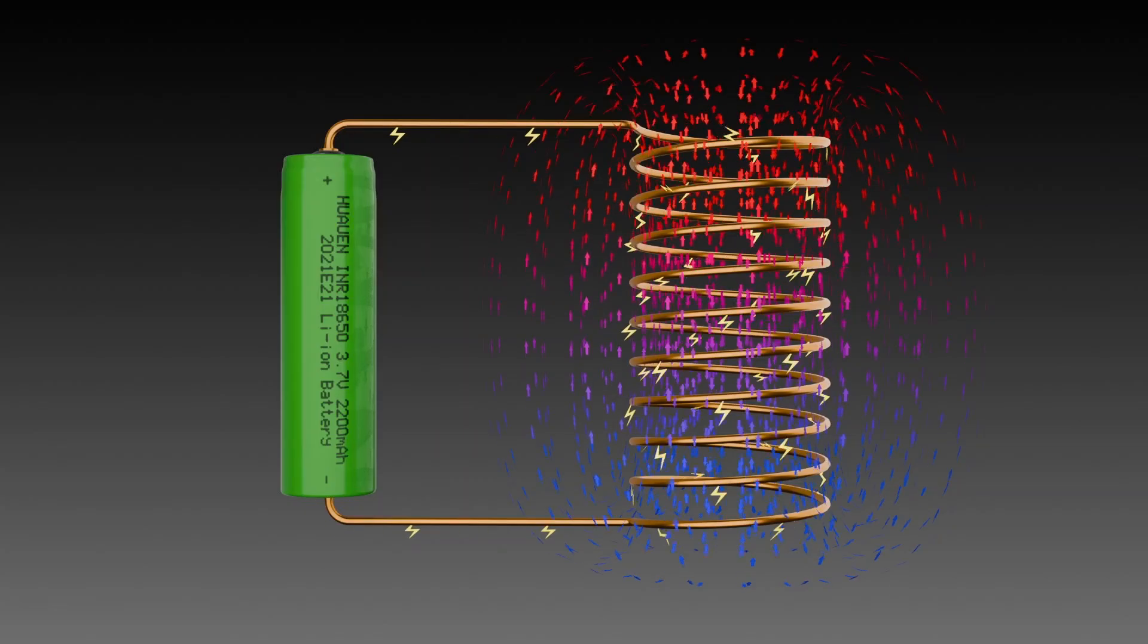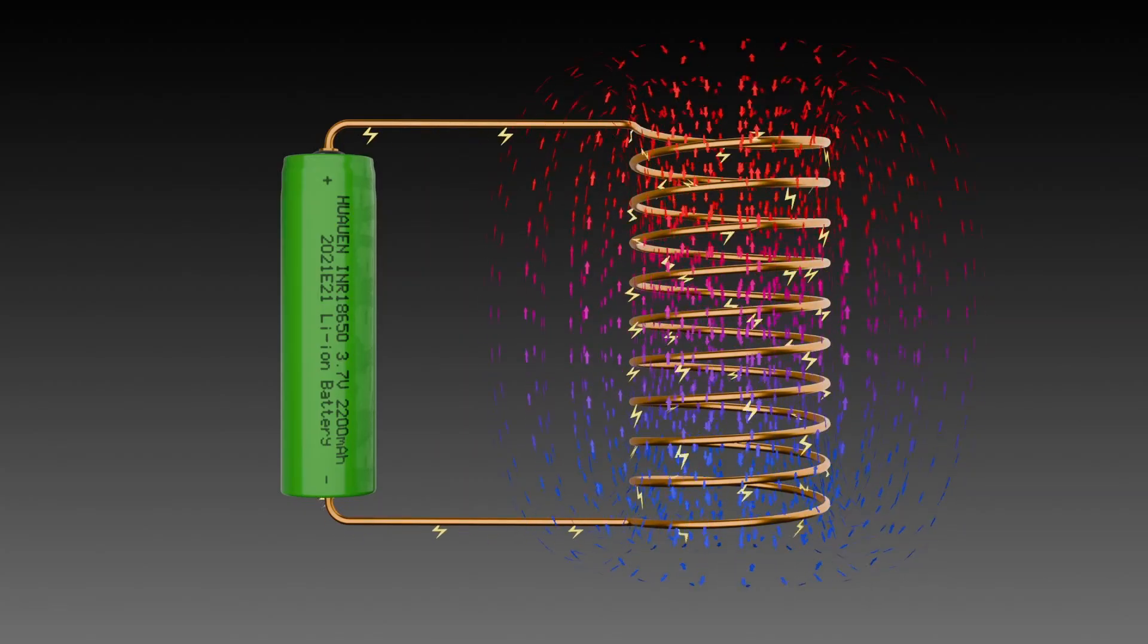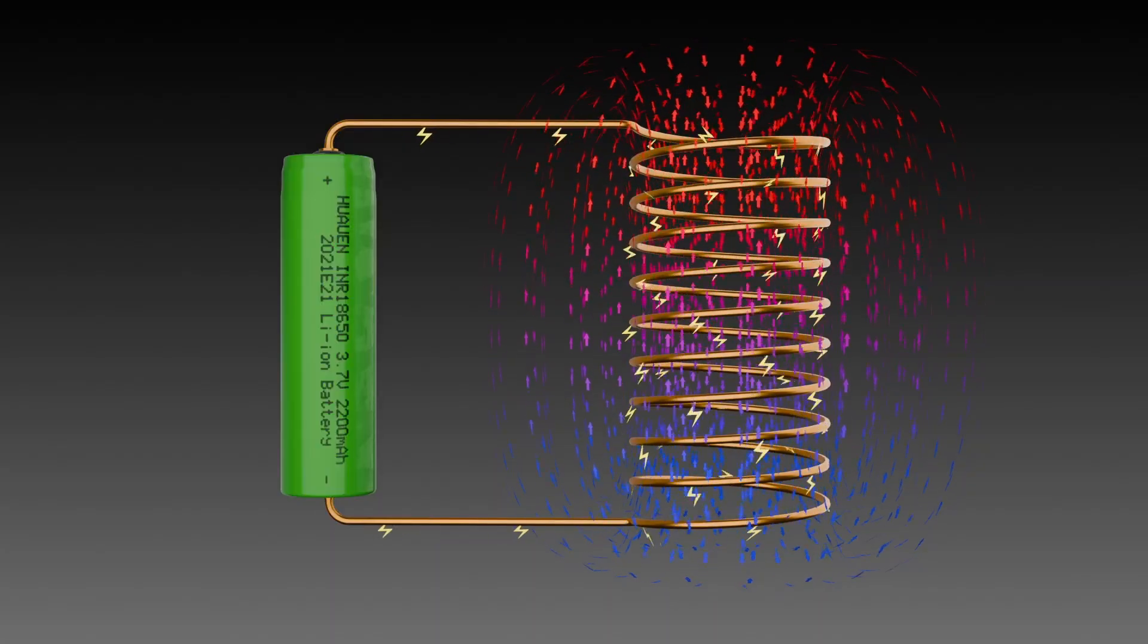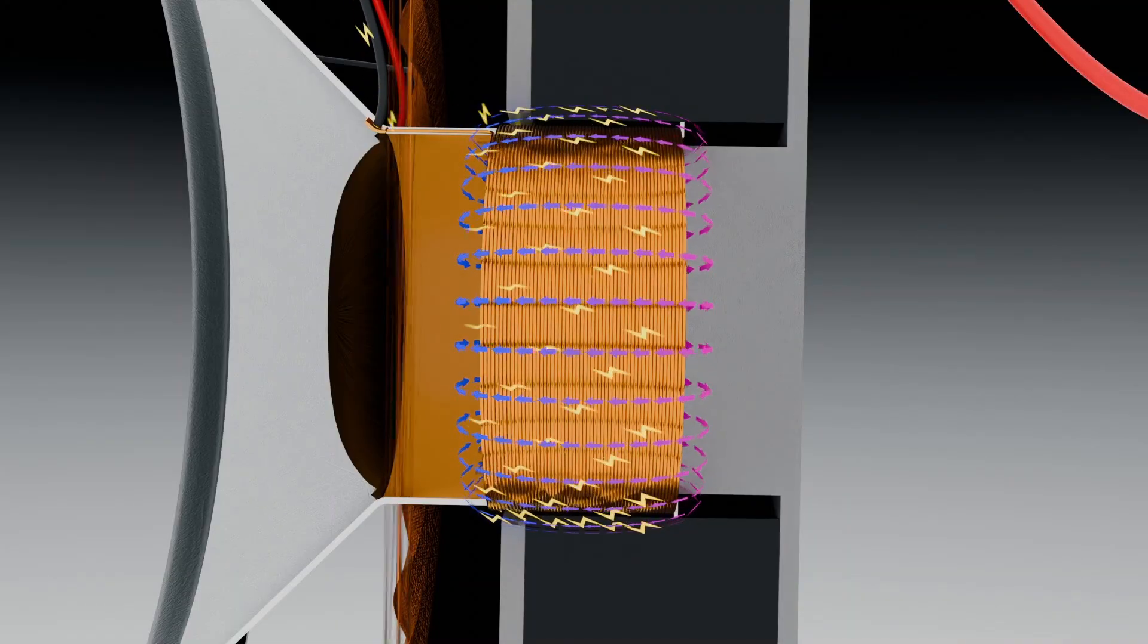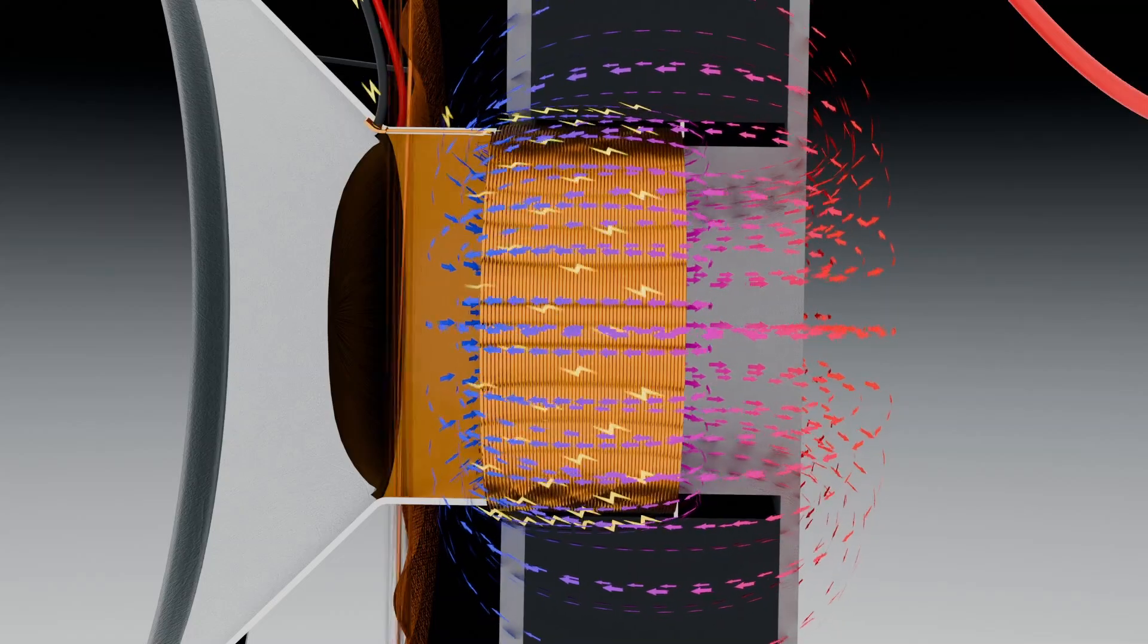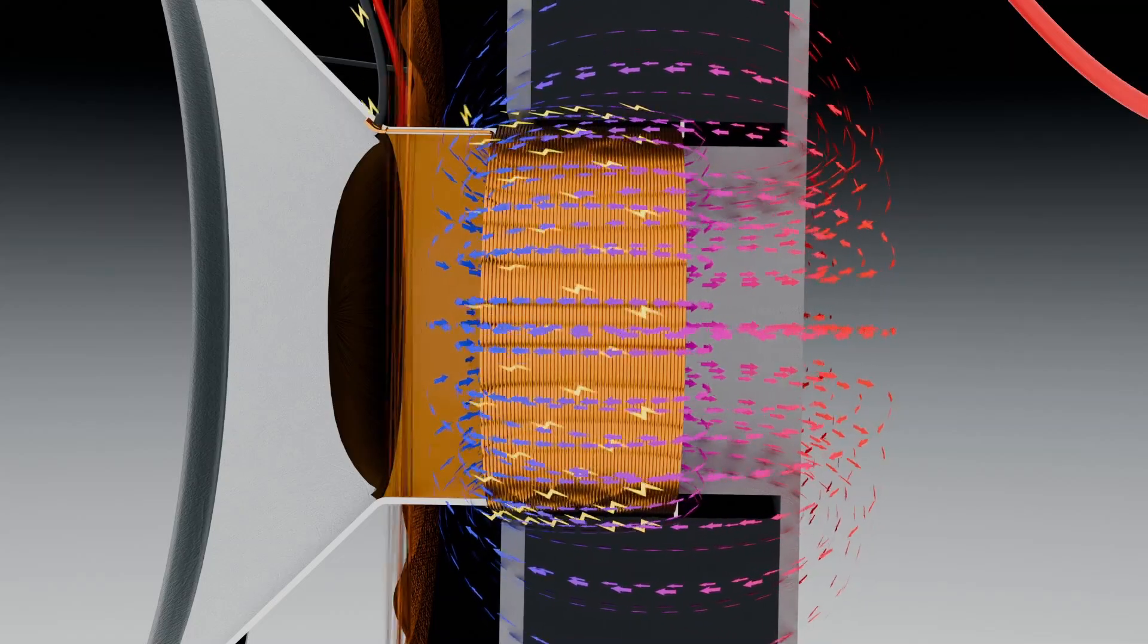When current flows through a conductor it generates a magnetic field, the direction of which depends on the direction of the current. Similarly, a magnetic field is produced in the coil. When this field interacts with the magnetic field of the permanent magnet, it generates either an attractive or repulsive force between them.